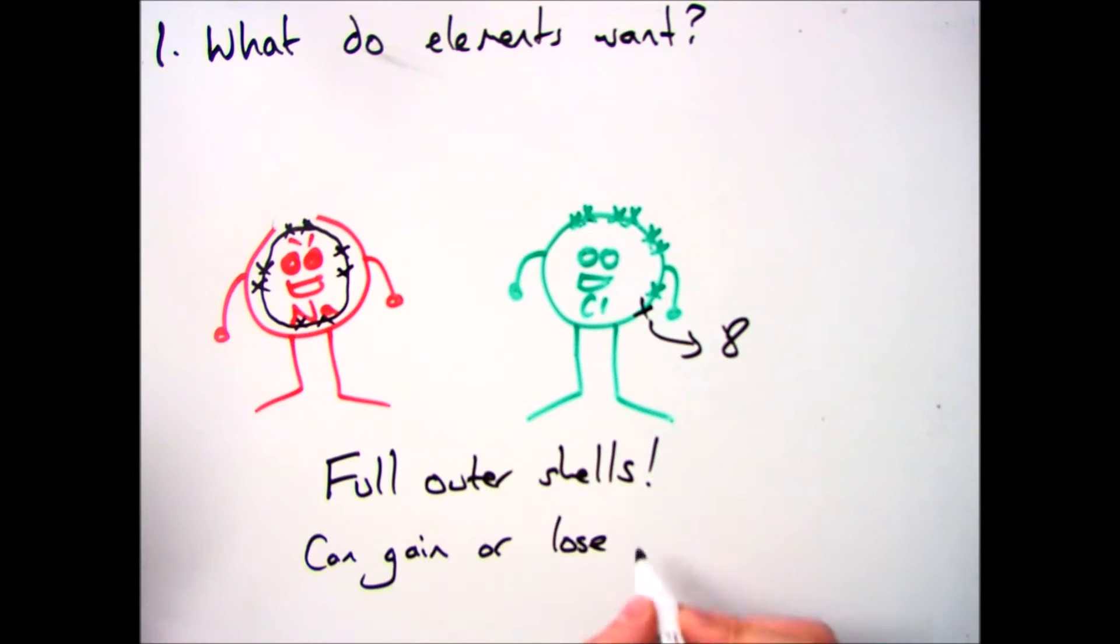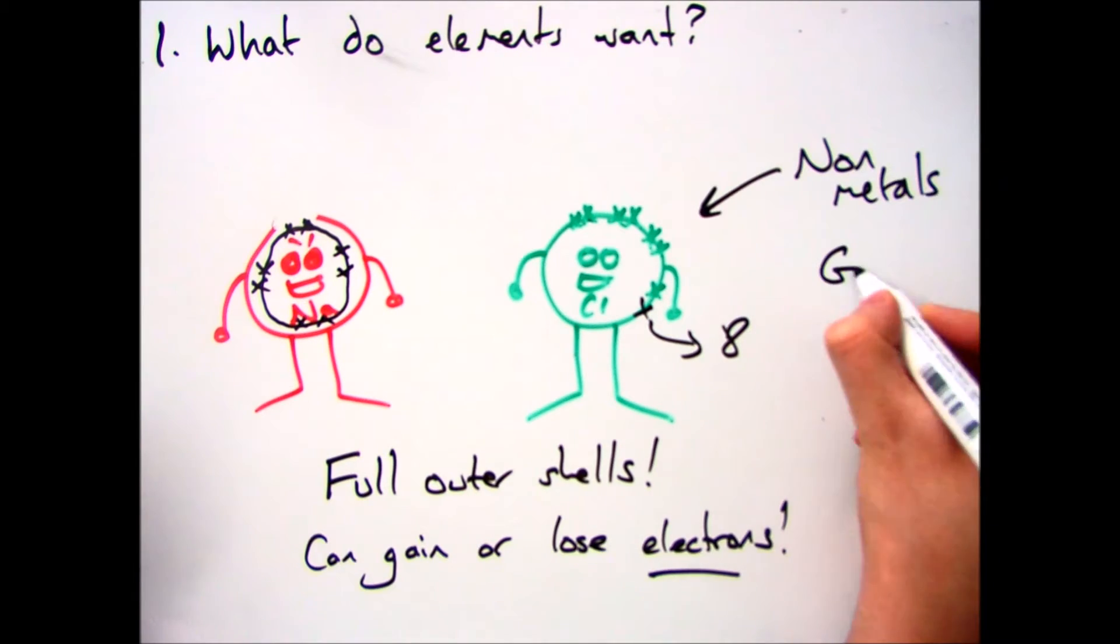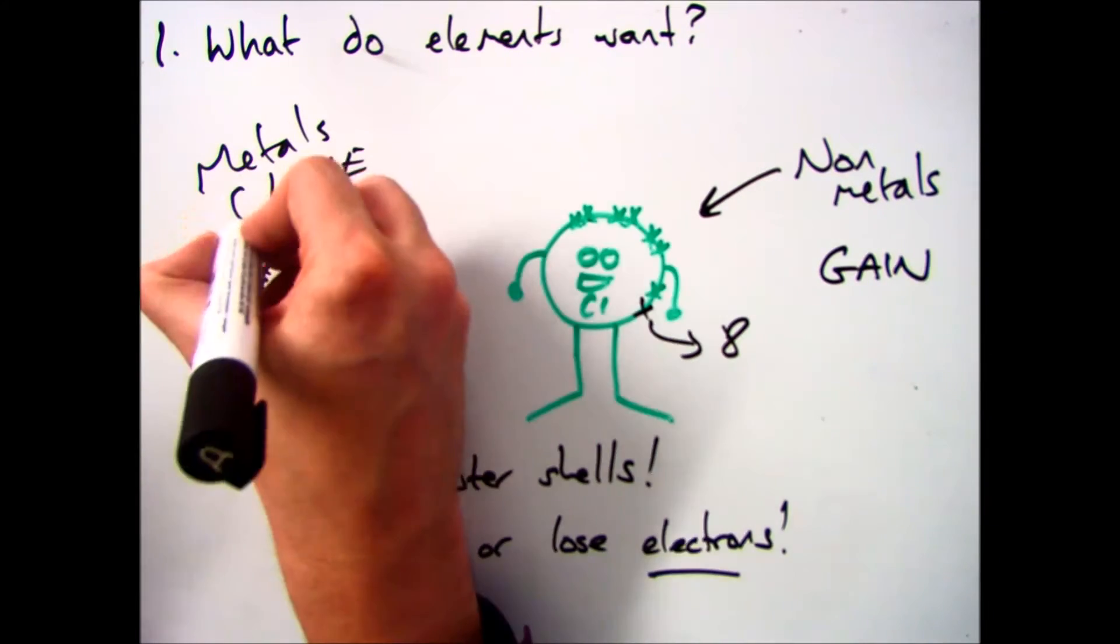And the general rule is that all non-metals will gain and all metals will lose electrons to get that full outer shell.